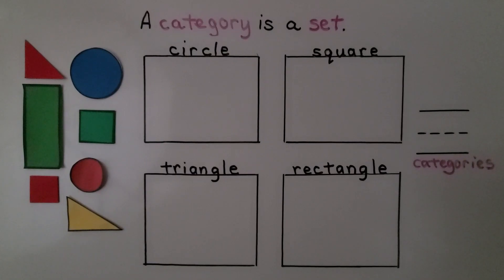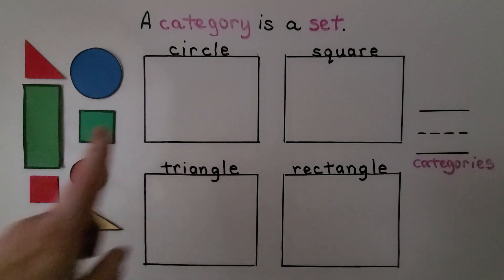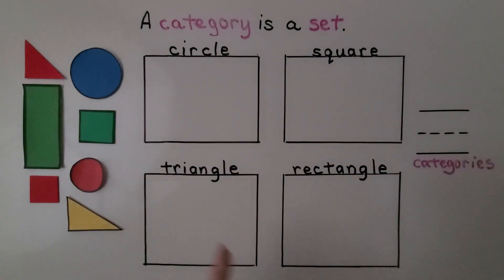A category is a group or set. We can sort and classify these objects into different categories by their shape.